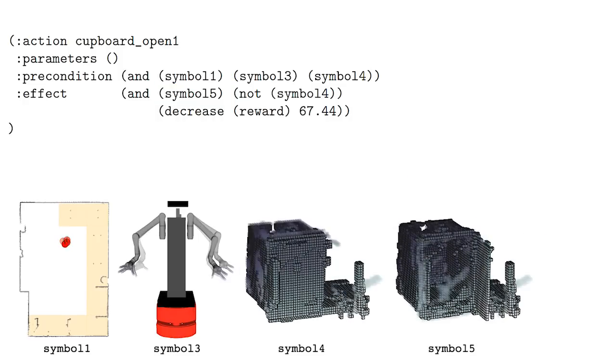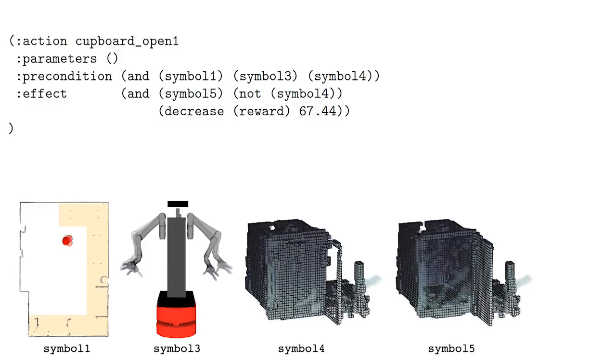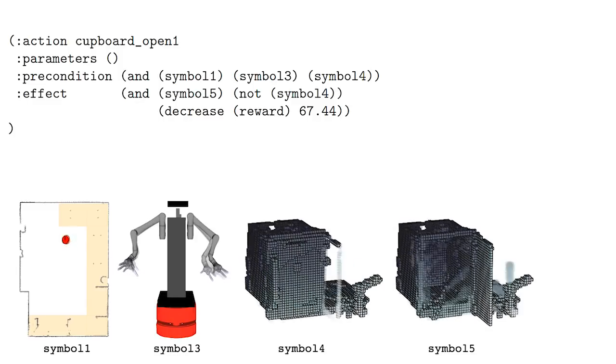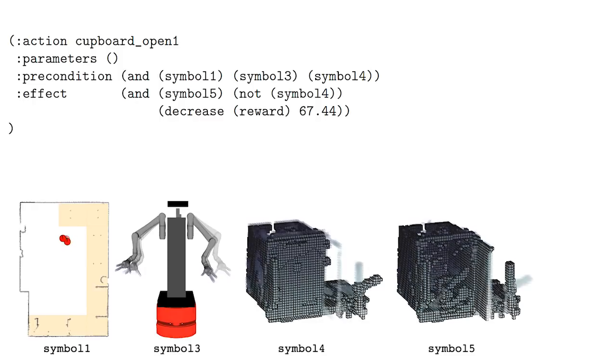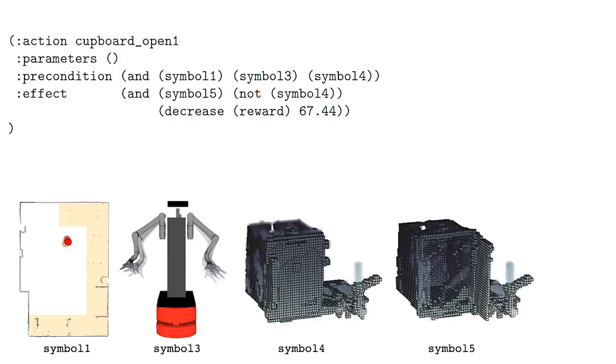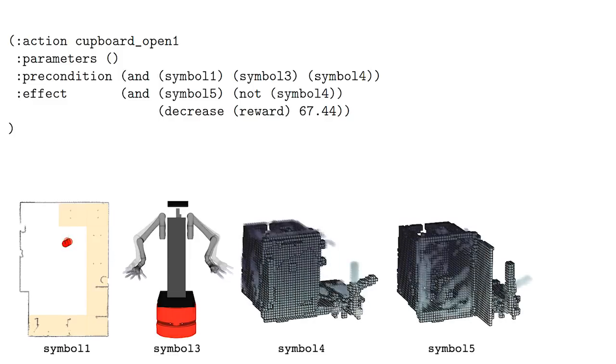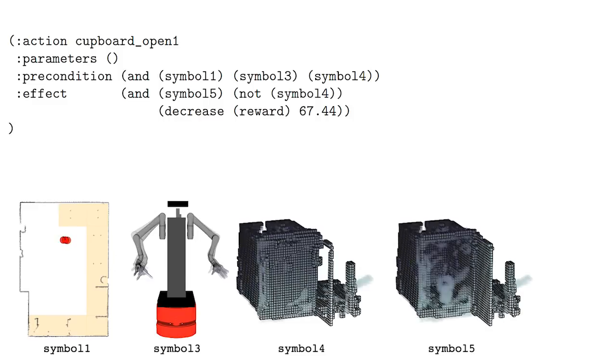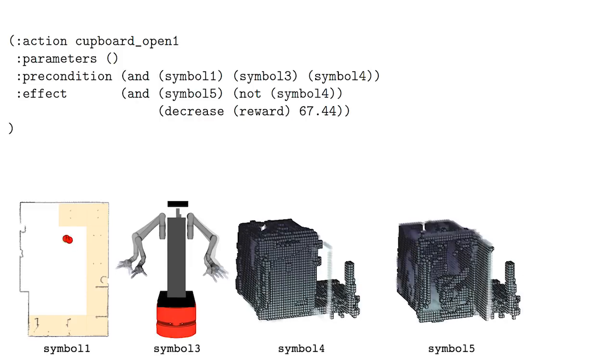This operator therefore describes the knowledge that, in order to successfully open the cupboard door, Anna should be standing in front of it, while not holding anything, and it should be currently closed. After she's done, the cupboard will no longer be closed, but be open instead. Note that the notions of open, closed, in front of the cupboard, and not holding anything, are not given to Anna, but are instead discovered autonomously by her, because there the abstractions necessary for reasoning about opening the door.